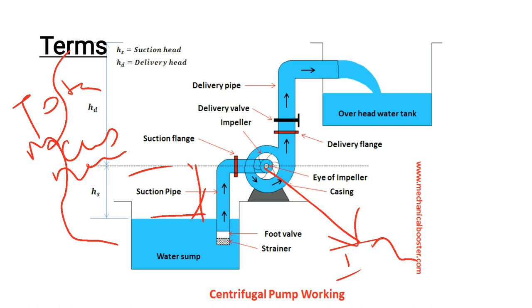The dynamic head includes the static head plus the friction head, discharge head, and hydraulic losses. Hydraulic loss includes losses due to friction, elbows, reducer valves, and other fittings in the pipe. Adding the velocity head gives us the total dynamic head.